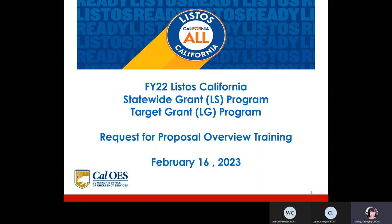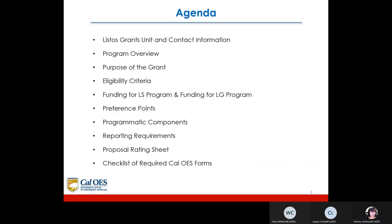Good morning everybody. I'll be going over the Request for Proposal Overview. Our agenda today is: Listos Grants Unit Contact Information, Program Overview, the Purpose of the Grant, Eligibility Criteria, Funding for the LS Program and Funding for the LG Program, Preference Points, Programmatic Components, Reporting Requirements, Proposal Rating Sheet, and Checklist of Required Cal OES Forms.